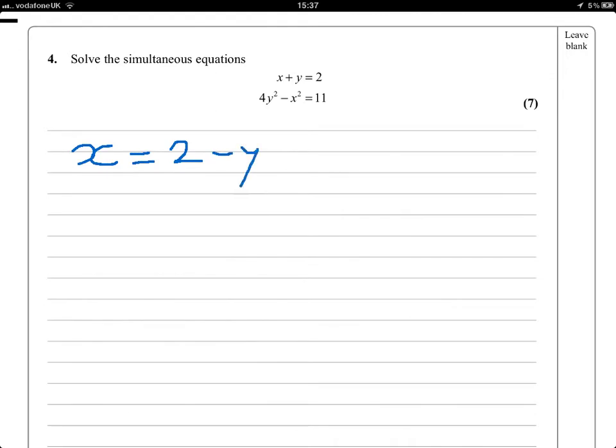And if I substitute this into my second equation, so 4y squared minus, and instead of x I'm going to write 2 minus y squared is equal to 11. There is a quadratic equation, maybe not as straightforward as you'd like, in terms of y, which I will now be able to solve.